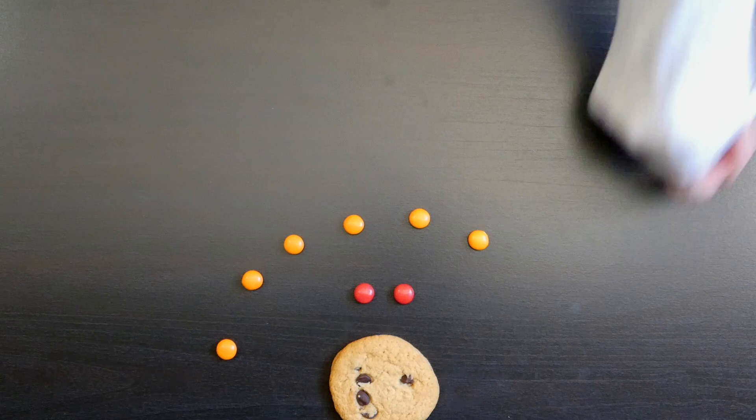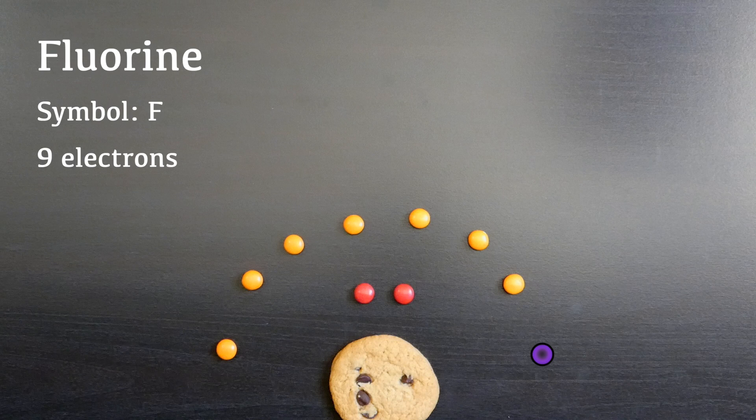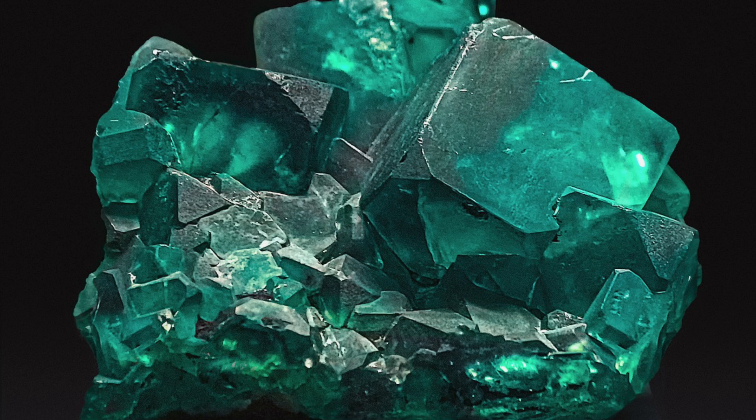Next, we have the first of the halogens, which I like to call the vicious elements. Fluorine only needs one electron to stabilize itself, and it's incredibly efficient at tearing that electron from another atom. Luckily for humans, the high reactivity of fluorine means it is unlikely to be found by itself.